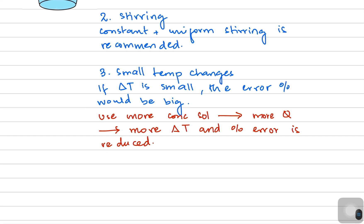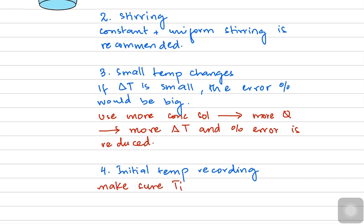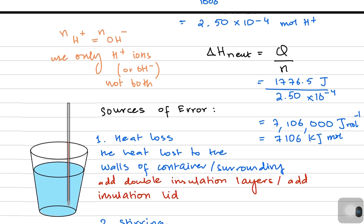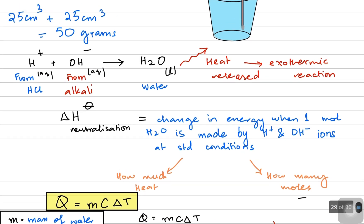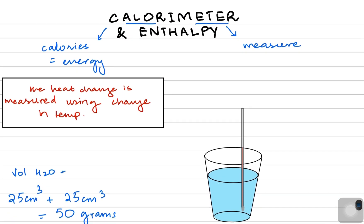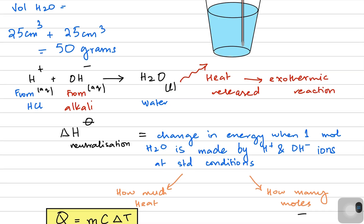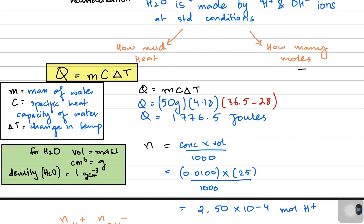The last source of error is initial temperature variation. You must make sure you measure the initial temperature every time you perform this experiment, ensuring that both the initial temperature Tᵢ and final temperature Tf are recorded properly for all experiments done on the calorimeter. This is the overall idea of the calorimeter. In the next video we'll be doing some past papers — stay tuned!